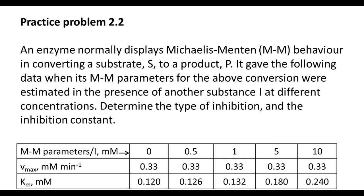Let us look at practice problem 2.2. An enzyme normally displays Michaelis-Menten behaviour in converting a substrate S to a product P. It gave the following data when its MM parameters for the above conversion were estimated in the presence of another substance I at different concentrations. Determine the type of inhibition and the inhibition constant. You are given Vmax (in millimolar per minute) and Km (in millimolar) at inhibitor concentrations of 0.5, 1, 5, and 10 millimolar. You are asked to find the type of inhibition and the inhibition constant Ki. Go ahead and do it — when we meet in the next lecture, we will take things forward.